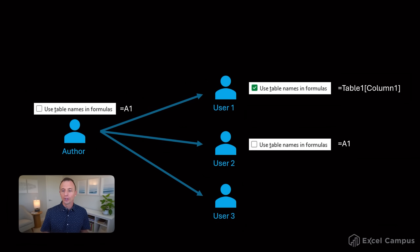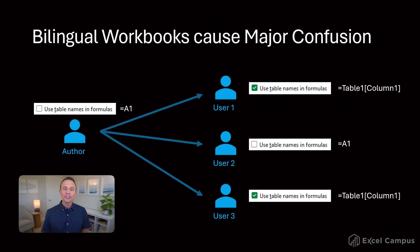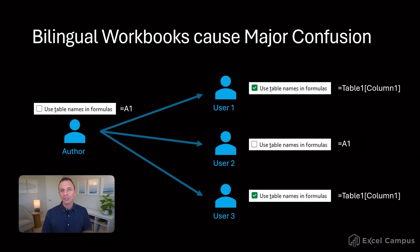What happens here is we can have users of the file with different settings, and this creates what I call bilingual workbooks — because you'll have all different types of references within the same file, which can cause a lot of confusion.